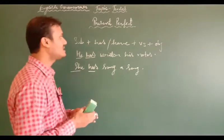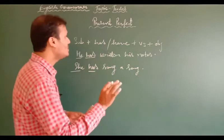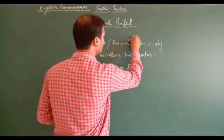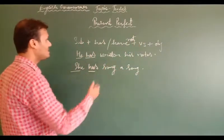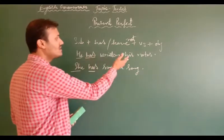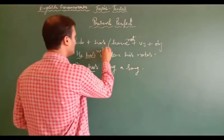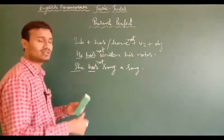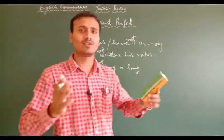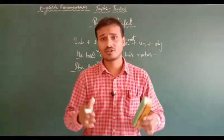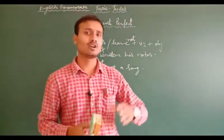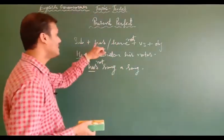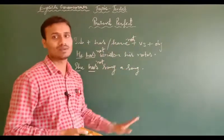Students, if you want to change the sentence into negative, you have to just use 'not' after the auxiliary has or have — it will become the negative structure. Like: 'He has not written his notes.' 'She has not sung a song.' 'I have not played football.' 'They have not visited here.' 'I have not taught you.' 'He has not visited here.' 'They have not completed their project.' In all these sentences, to make negative sentences, you just use 'not' after the auxiliaries — it is very simple.